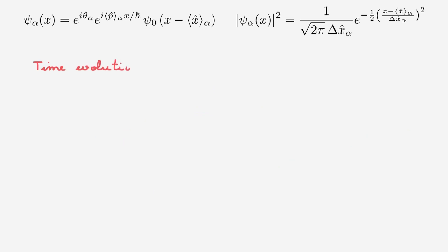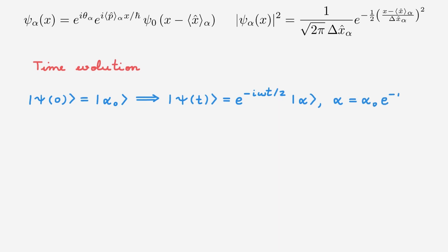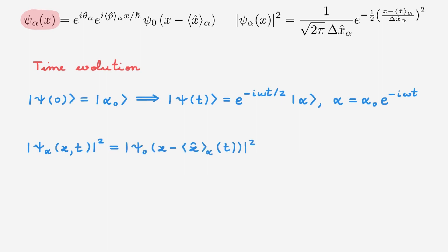Let's next consider the time evolution of the coherent state wave function. If the initial state is a coherent state alpha zero, then the state at a later time t is equal to a global phase factor times another coherent state alpha, where alpha equals alpha zero times a time-dependent phase — a coherent state stays coherent at all times. Rather than writing the full wave function, we directly consider the time dependence of |psi|², which is the absolute value squared of the displaced ground state, but now the displacement is time-dependent because the coherent state evolves according to this expression.